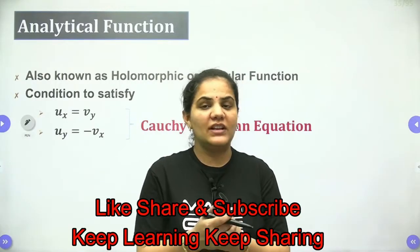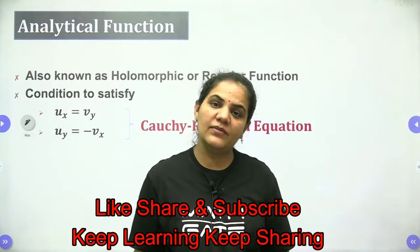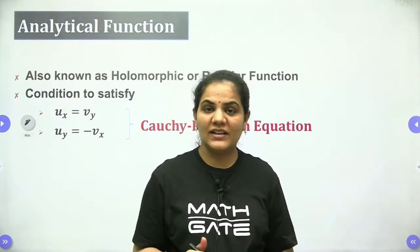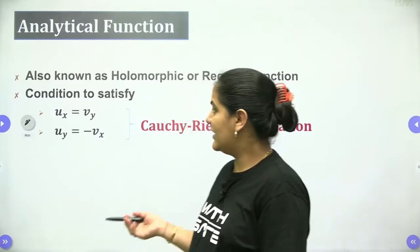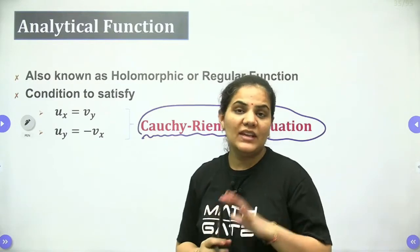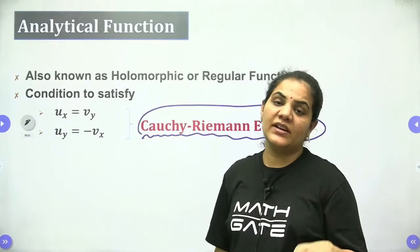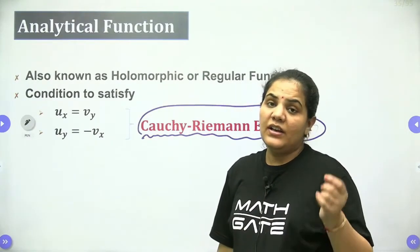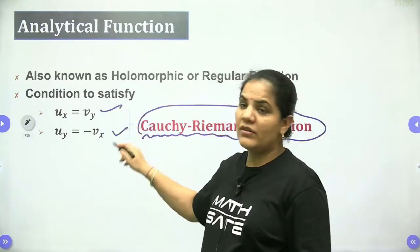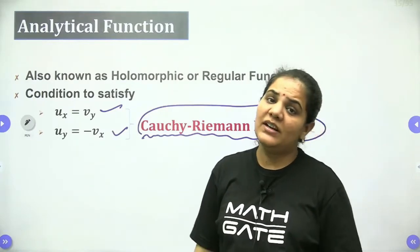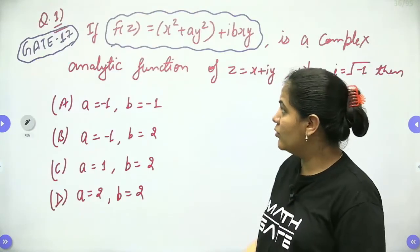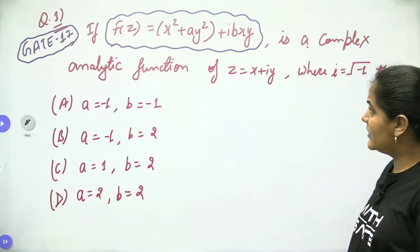Hello dear students. In the last lecture we discussed about the analytical function — what is an analytical function and how to approach the questions. As we know, an analytical function is one which satisfies the Cauchy-Riemann equation. Any complex function is said to be an analytical function if it satisfies the Cauchy-Riemann equation: u_x equals v_y and u_y equals minus v_x. Now let's discuss a few more problems based on the analytical function.